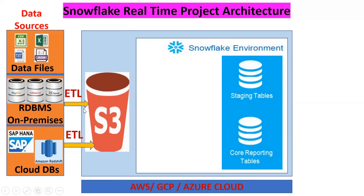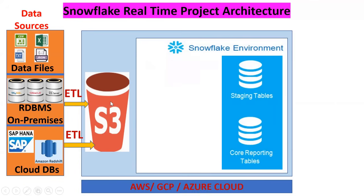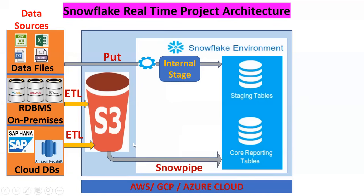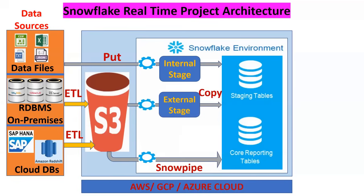From the S3 bucket, our target is to load data into the Snowflake tables. We use internal stages with PUT command for local files, Snowpipe for continuous loading, external stages with COPY command, or external tables. By these four methods — PUT command, COPY command, external tables, and Snowpipe — we load all source data into our Snowflake tables. Virtual warehouses are used to perform any compute operations in Snowflake.